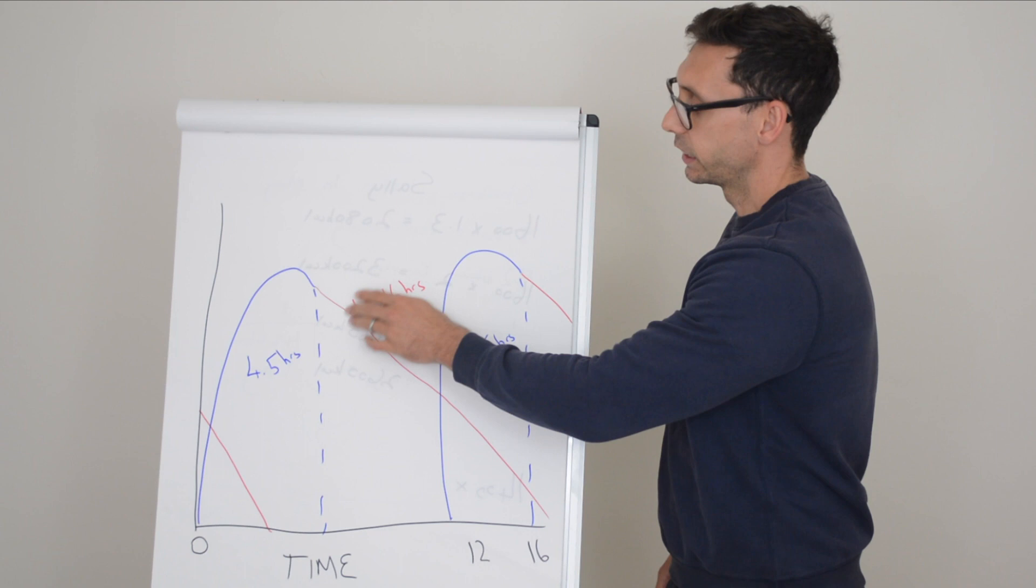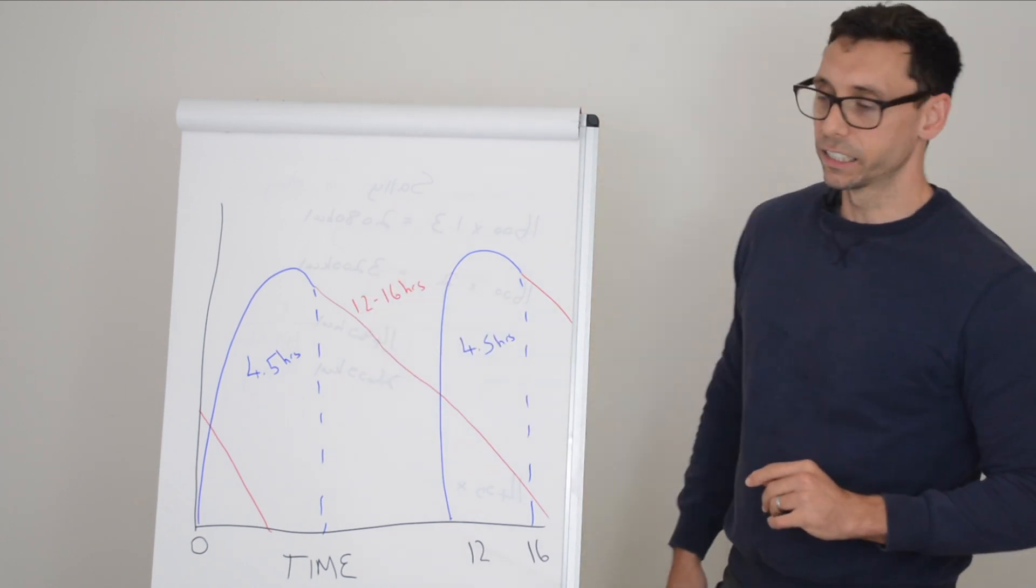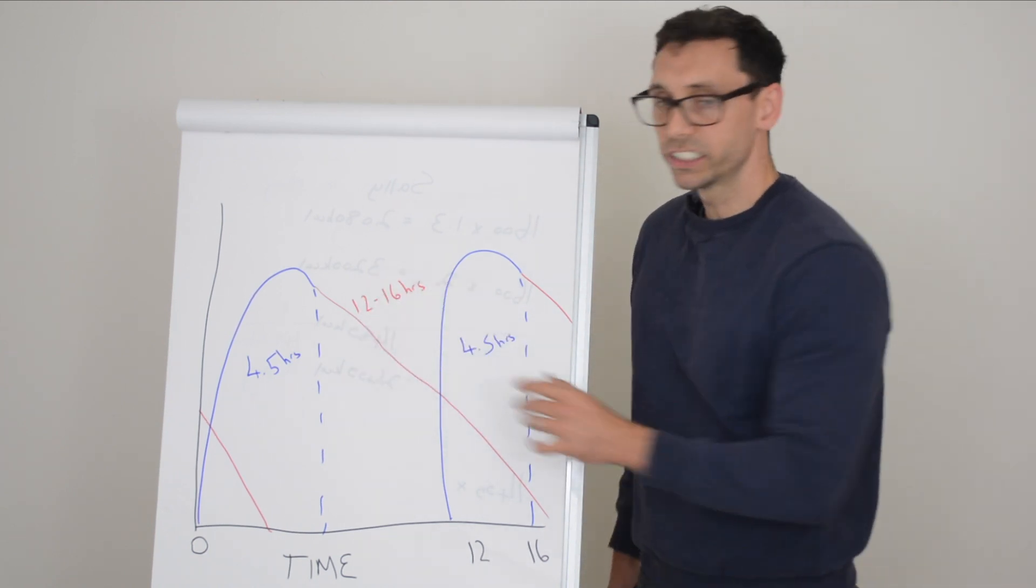Then the other component of a mixed insulin is something called an intermediate acting insulin. Now this one lasts between 12 and 16 hours.